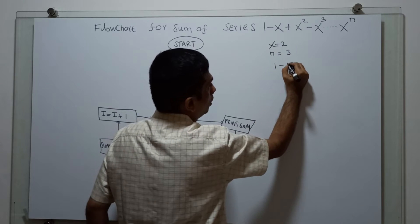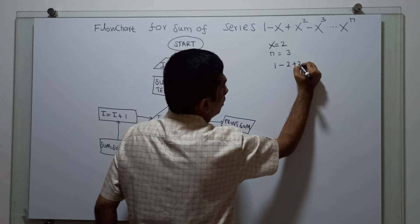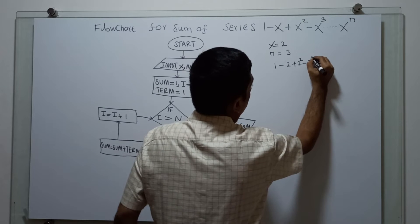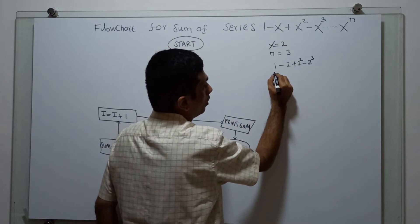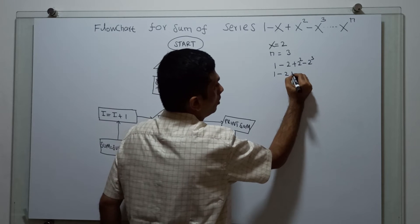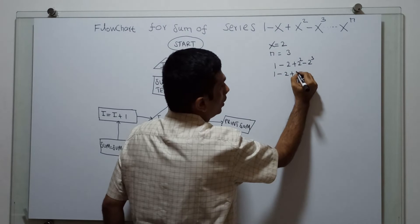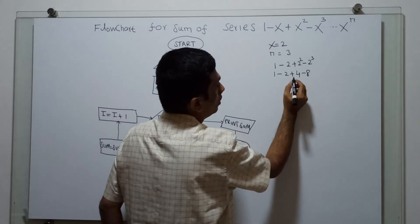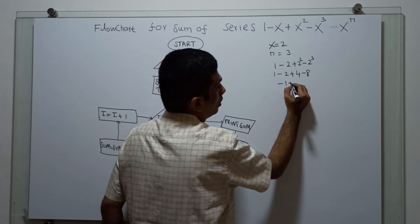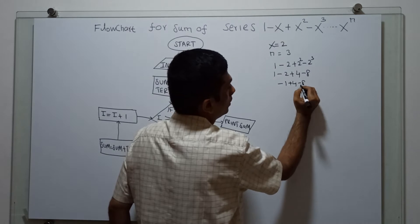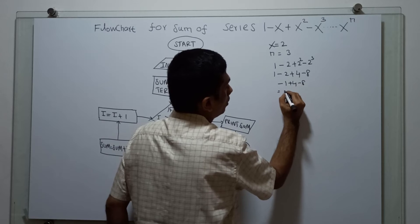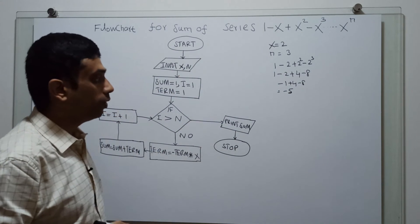That is: minus x equal to minus 2, plus x squared equals 2 squared equals 4, minus x cubed equals minus 2 cube equals minus 8. So: 1 minus 2 equals minus 1, plus 4 minus 8 gives minus 9 plus 4, which equals minus 5.